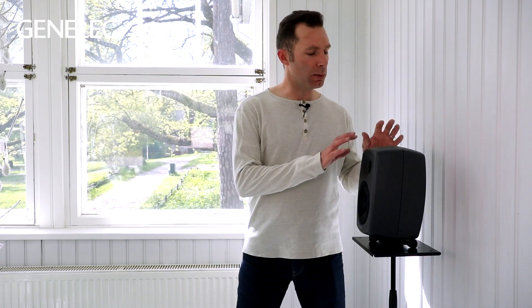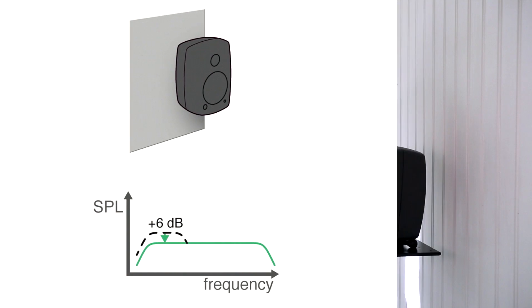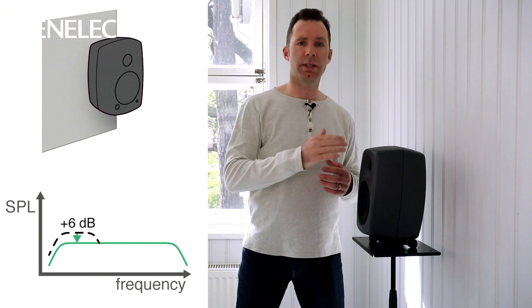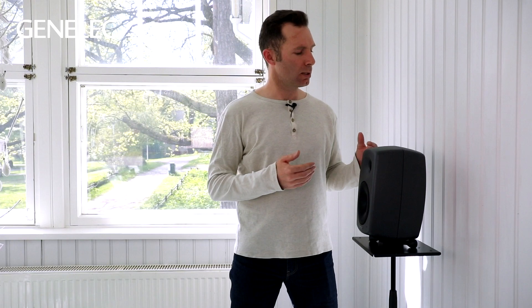Hi, I'm Darren Rose from Genelec. You've probably got your loudspeakers close to your rear wall to minimise the effect of rear wall cancellation dips and keep a nice smooth frequency response, but you're probably now seeing raised levels at low frequencies, and this is due to the low frequency omnidirectional nature of loudspeakers.